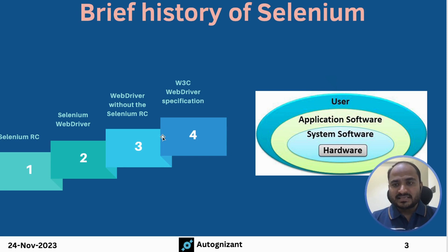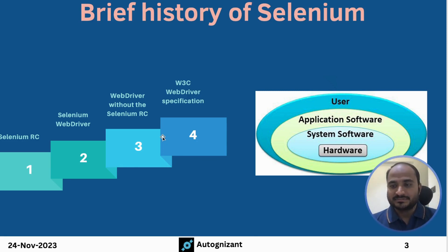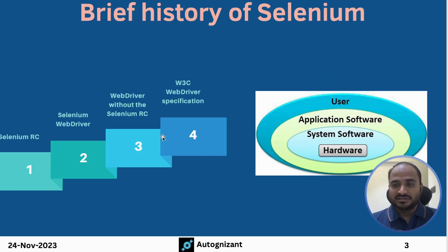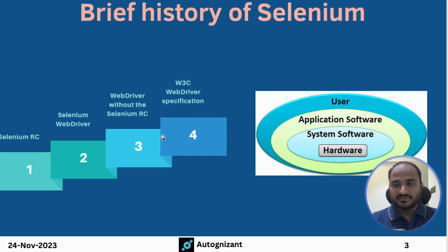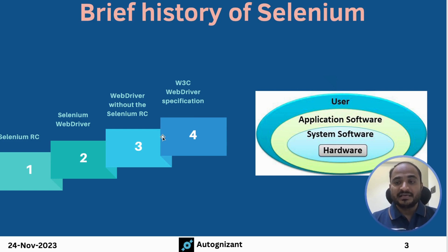You might be wondering why there is a diagram showing hardware, system software, and application software. The reason behind this diagram is to explain how automation is happening in the background. People think they know Selenium but miss this fundamental point. Basically, we have hardware; on top of hardware there is an operating system (system software); and on top of that we have application software available for end users.